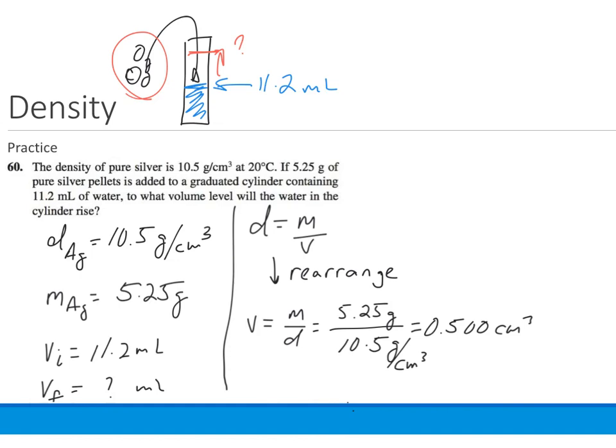With three significant figures being the needed number of sig figs. The answer to 5.25 divided by 10.5 is exactly 0.5. But remember, I need to have three sig figs because there were three sig figs in both my mass and my density. So my answer in volume has to have three sig figs.